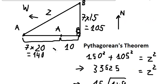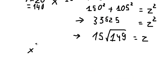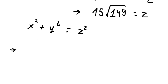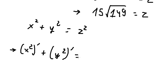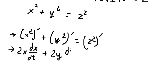I will put this side as x and this side as y. Now we have x squared plus y squared equals z squared — this is the Pythagorean theorem. Now if we take the first derivative of both sides, we get: 2x times dx/dt plus 2y times dy/dt equals 2z times dz/dt.